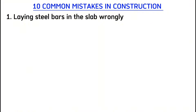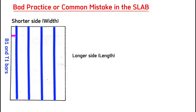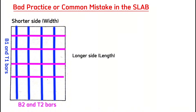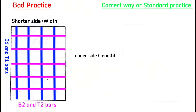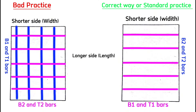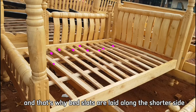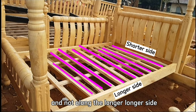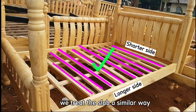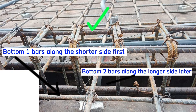Common mistake number one is laying steel bars in the slab wrongly. What most contractors or steel fixers do is lay bottom one bars along the longer side first, and then bottom two bars along the shorter side next, which is wrong. Due to the effect of sagging and hogging bending moments, this makes the slab weak. The correct version is laying bottom one or top one bars along the shorter side first, then followed by bottom two or top two bars along the longer side. That's why bed slats are laid along the shorter side — it makes the bed strong and comfortable, and we treat the slab the same way.